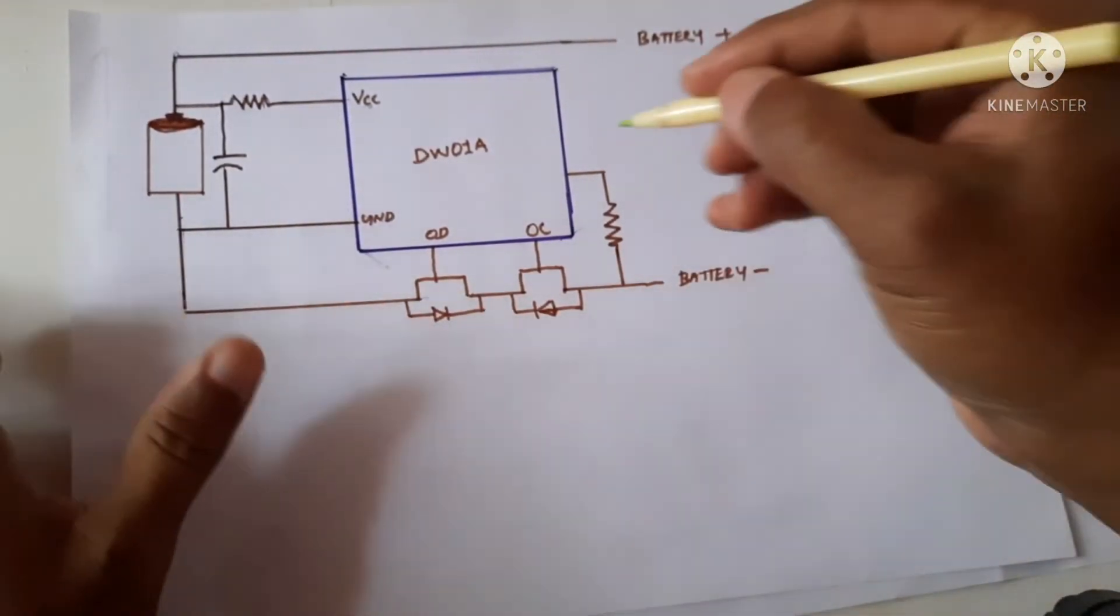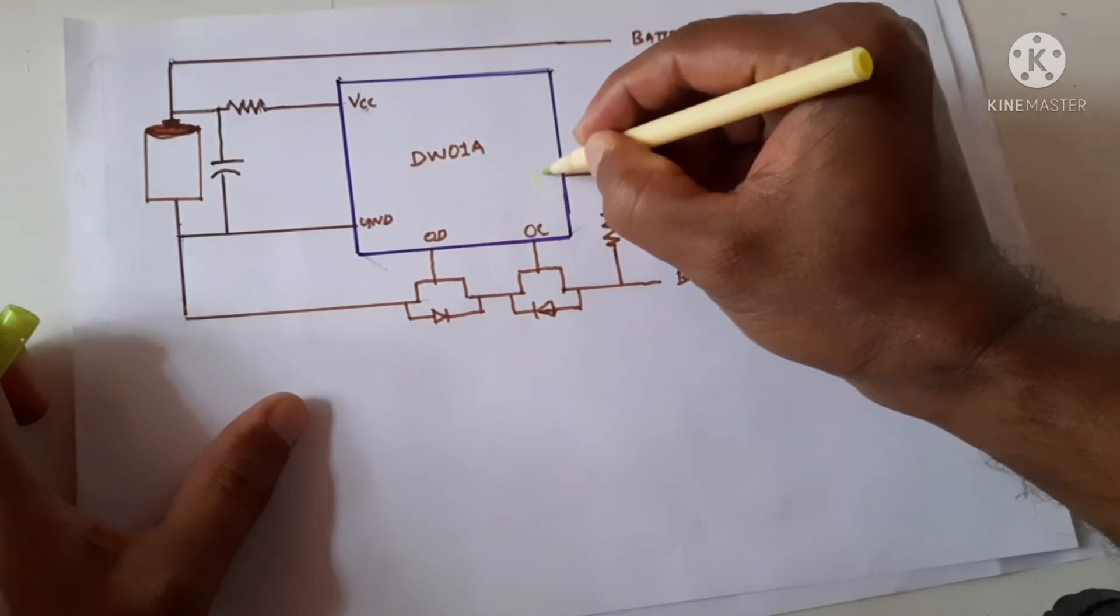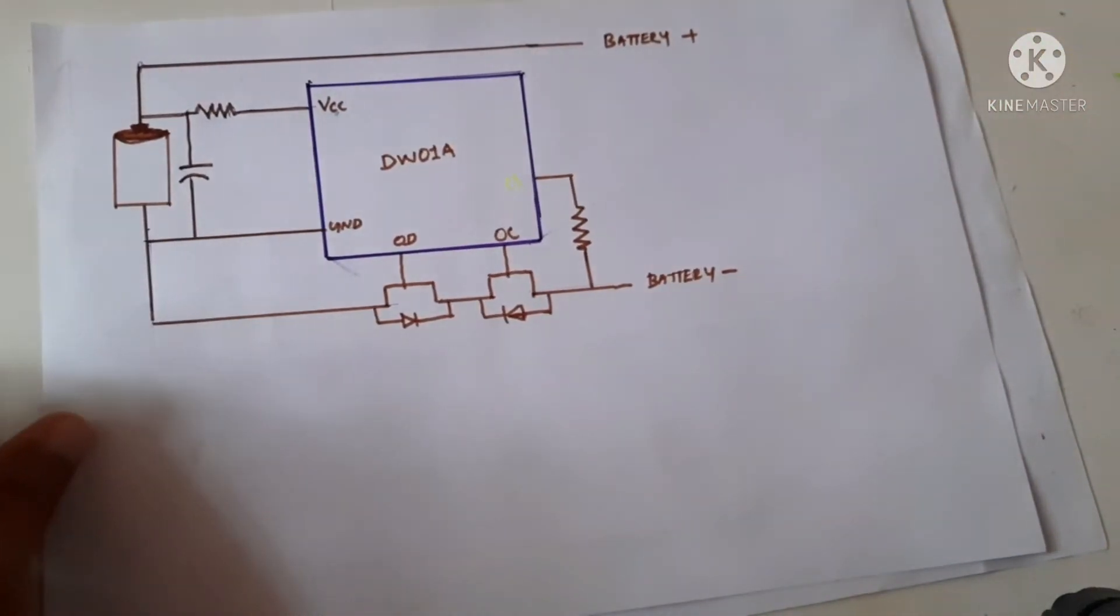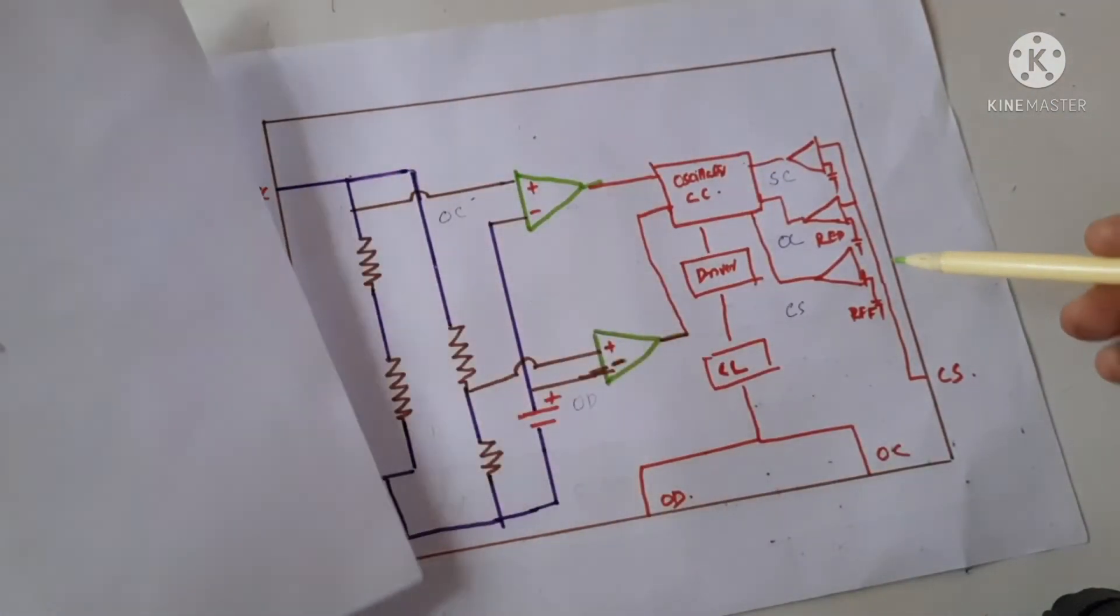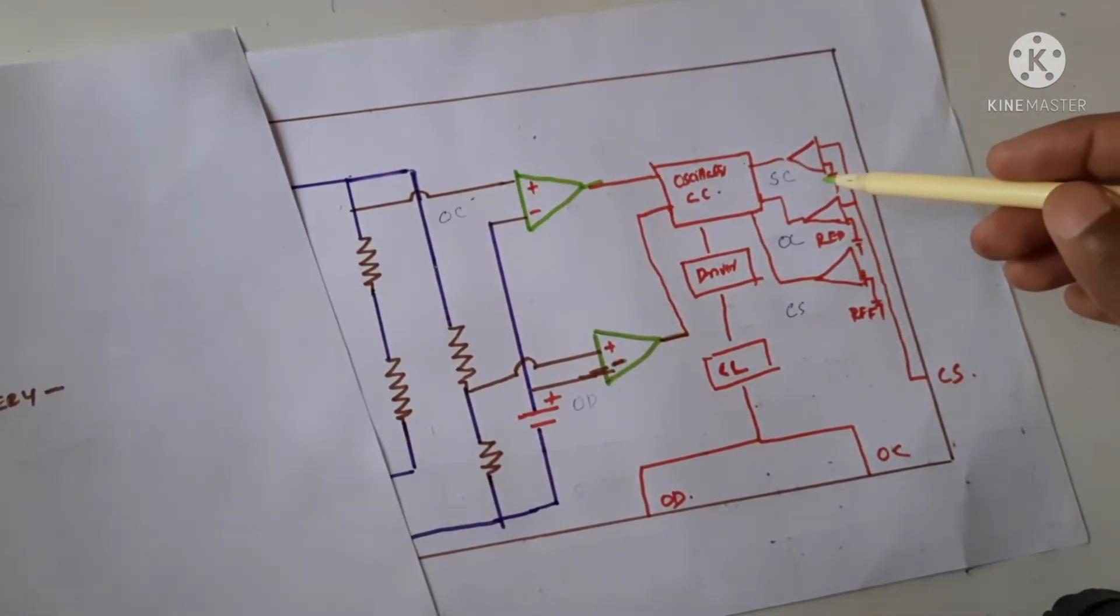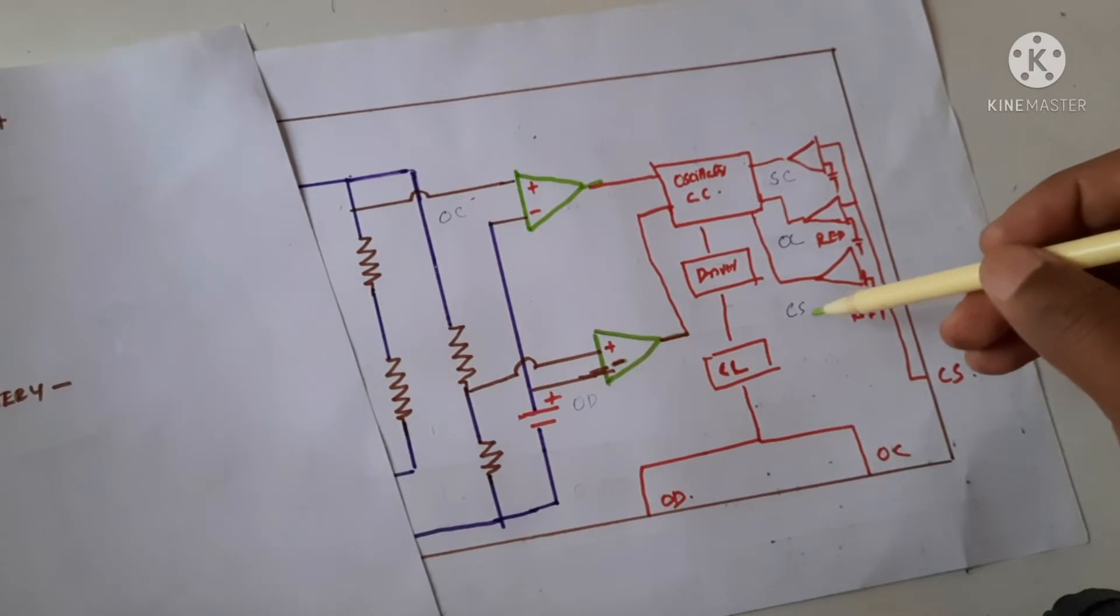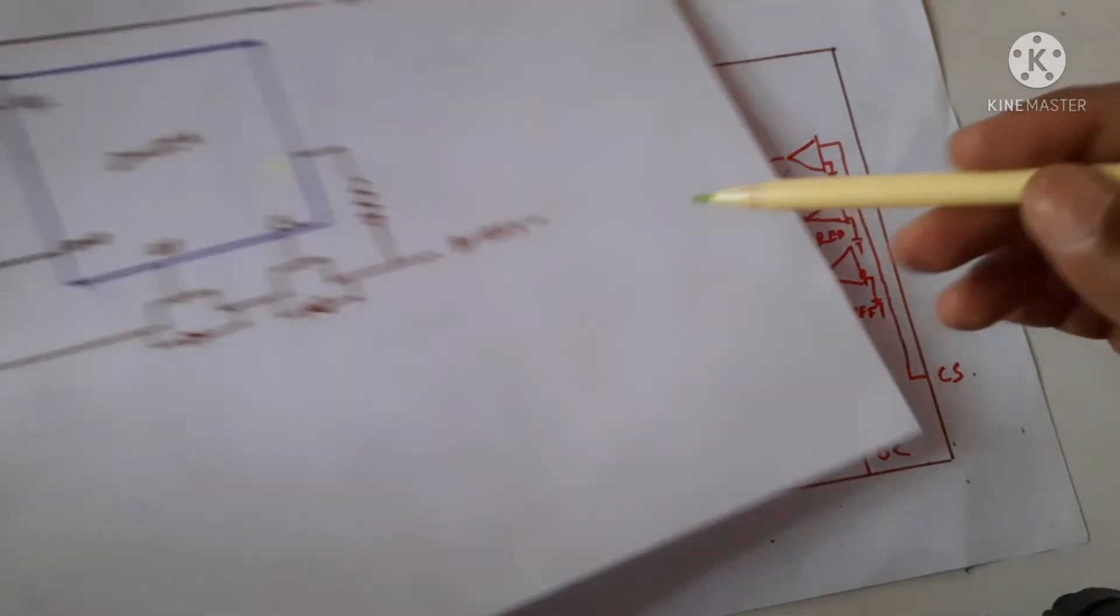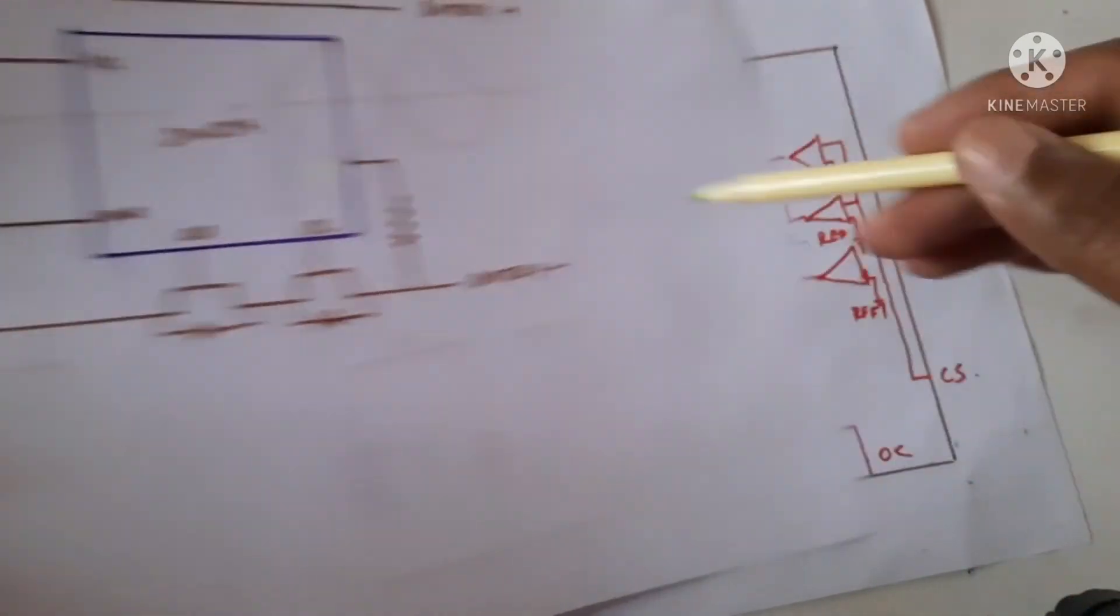And there is a pin, this is the pin called CES, current sensing pin. This pin senses the current at this point. Inside this there are three comparators. One comparator is for sensing the current, what is the current going through these MOSFETs.